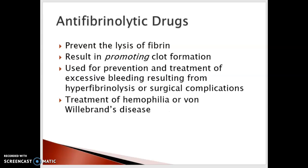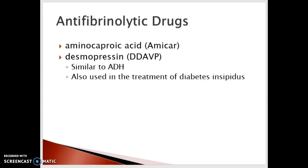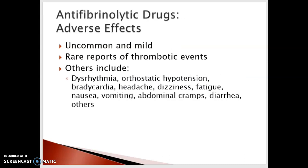The anti-fibrinolytic drugs prevent the lysis of fibrin, resulting in promoting clot formation. These drugs are at the opposite end of the continuum — they're used for the prevention and treatment of excessive bleeding resulting from hyperfibrinolysis or surgical complications, and more frequently in the treatment of hemophilia or von Willebrand's disease. Examples include Amicar, and DDAVP, which is desmopressin — similar to ADH. Adverse effects are uncommon and mild; rarely thrombotic events, dysrhythmia, orthostatic hypotension, bradycardia, headache, dizziness, fatigue, nausea, and vomiting.